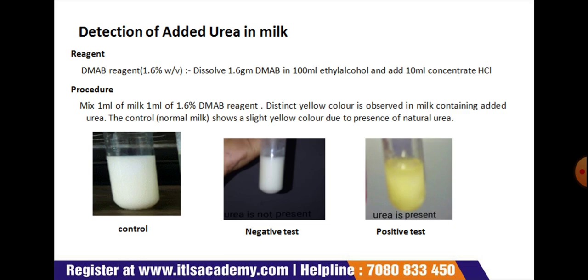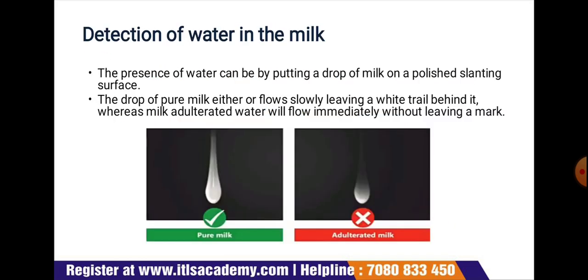Next is the detection of water in milk. It requires a simple technique: the presence of water can be detected by putting a drop of milk on a polished slanting surface. A drop of pure milk will flow slowly, leaving a white trail behind it, whereas milk adulterated with water will flow immediately without leaving a mark.